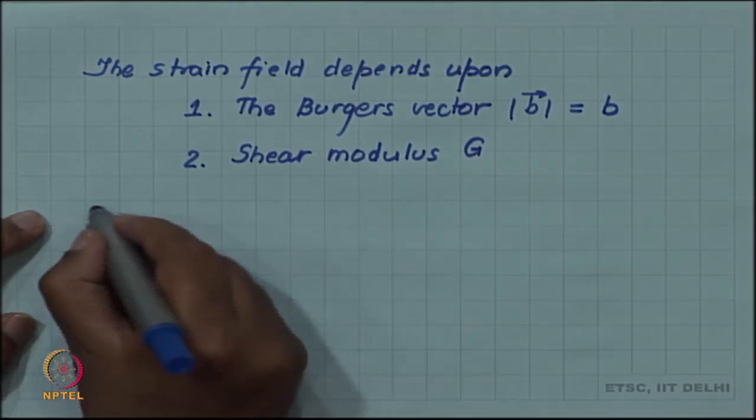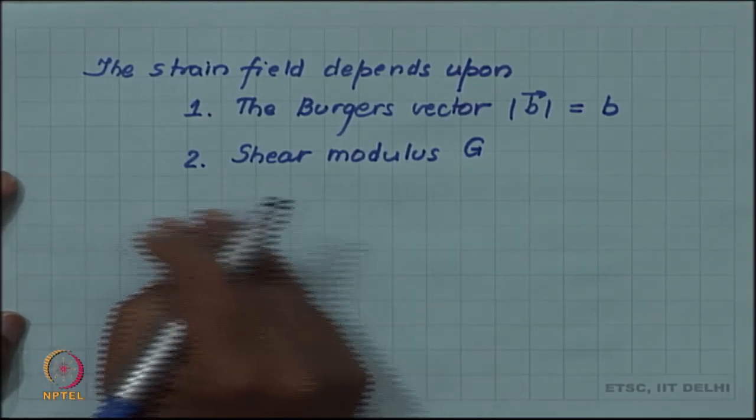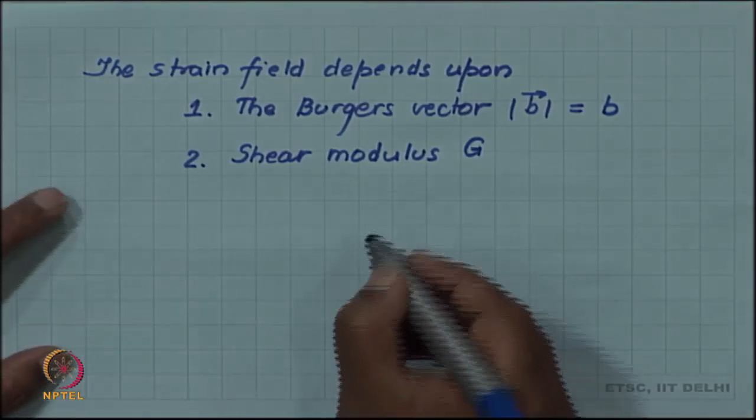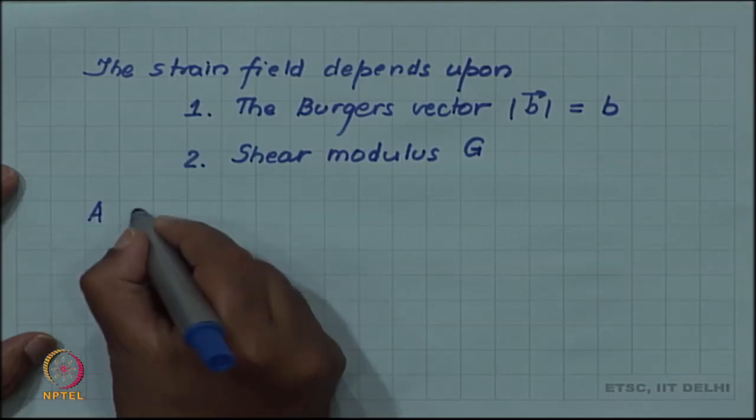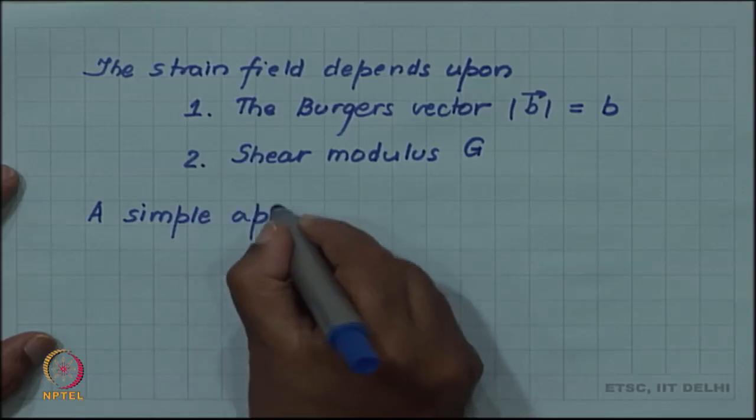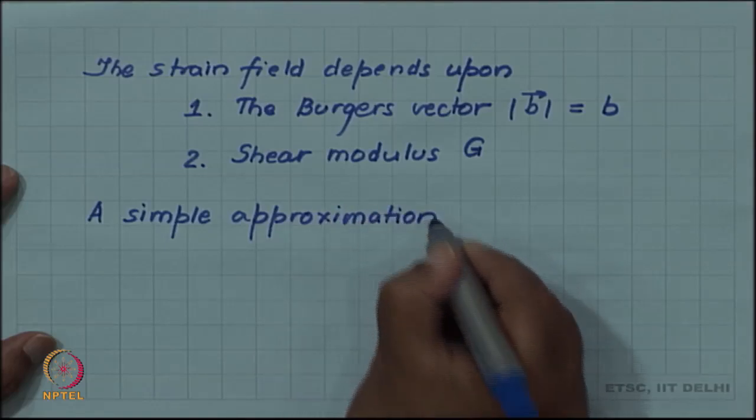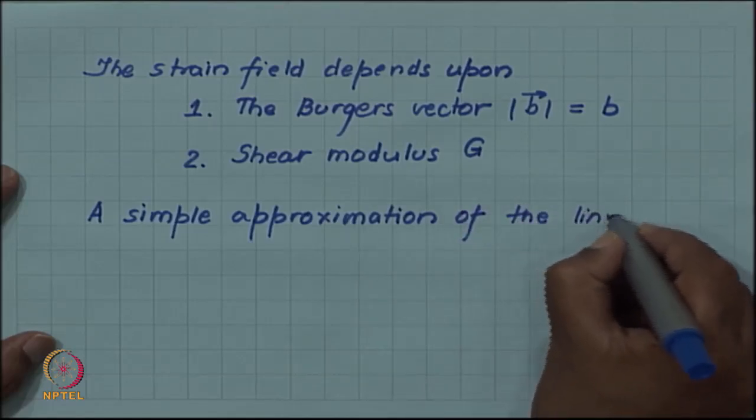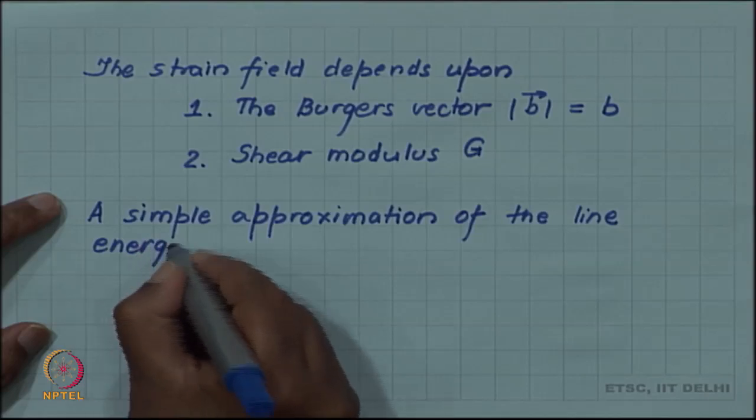An approximate simple formula can be written for both edge and screw dislocation, although there is some difference between the strain energy of edge dislocation and screw dislocation and detailed derivations have been made for them. We will take a simpler approximation, line energy sometimes called line energy.